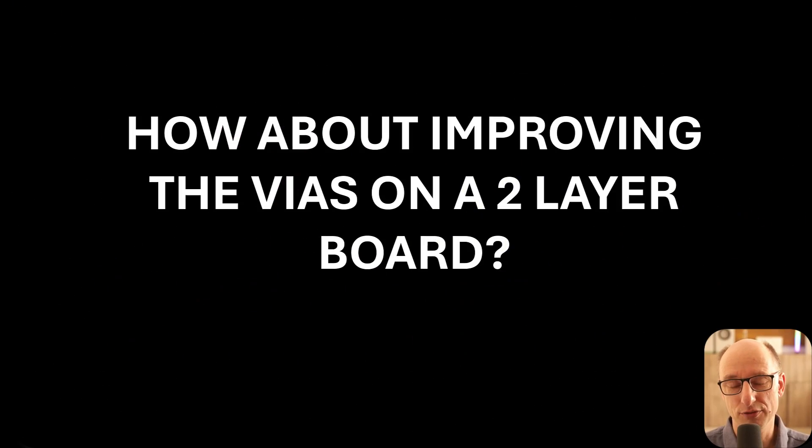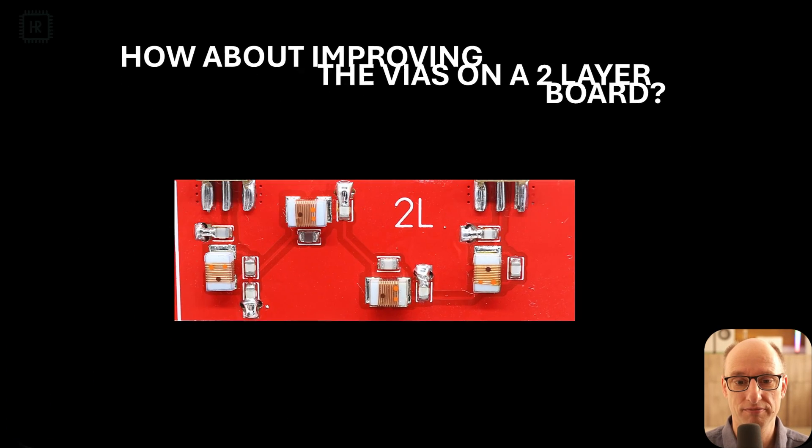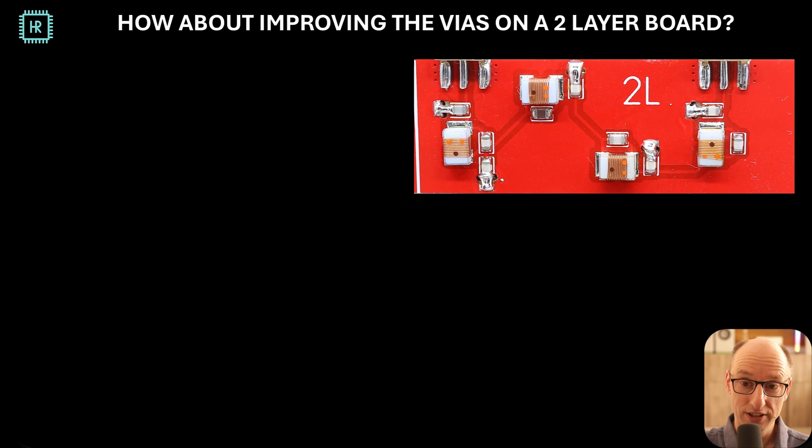We mentioned before that the VIAs on a 2 layer board are terrible. 500 picohenries versus the 12 picohenries on the 4 layer stack up that we're using. So what would happen if we were to improve these VIAs? Well, I did that. I had to drill a few extra holes. So you can just see it here in the picture, two extra holes near every VIA. And the original VIA is still there. So basically, we have triple VIAs now.